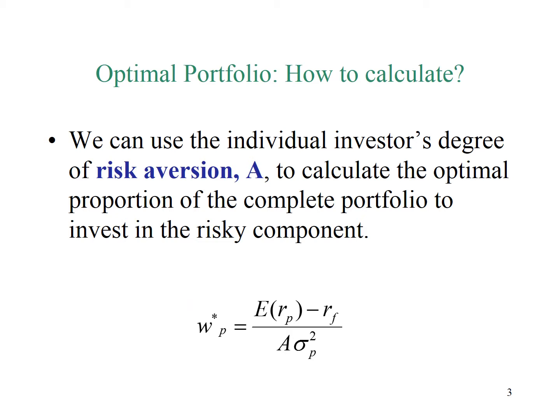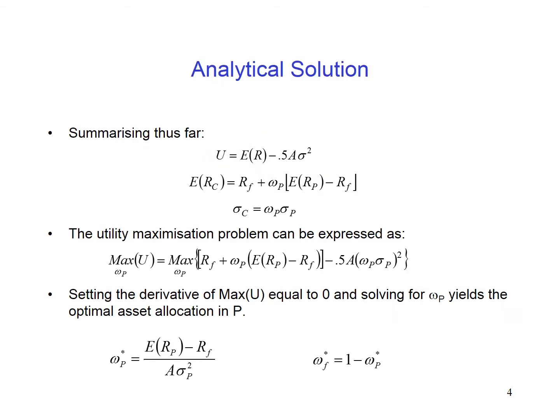Here is the formula to compute the optimal complete portfolio. This solution shows the weight or optimal position in risky asset. Take note that the investor's risk aversion, A, is considered in the formula. How is the formula formed? Here are the explanations.